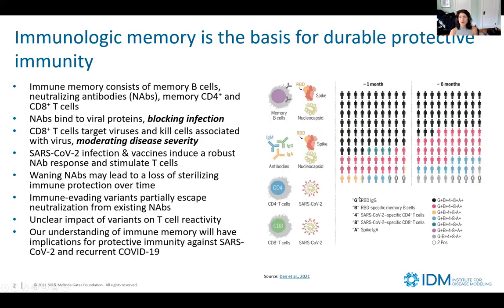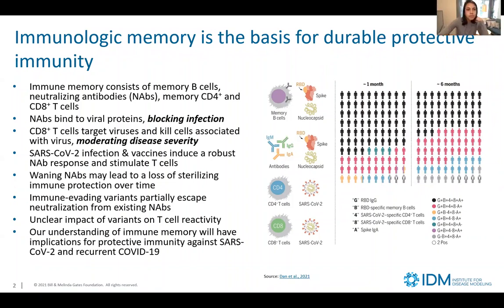Our bodies do a pretty incredible job of generating immunologic memory that serves as the basis for durable protective immunity. That immune memory consists of memory B cells, neutralizing antibodies, memory CD4 and CD8 T cells, each serving a different function. Neutralizing antibodies, which I'll refer to as NAbs, bind to viral proteins and block infection — they act very quickly. CD8 T cells kill virus-infected cells, moderating disease severity, though they tend to act more slowly.